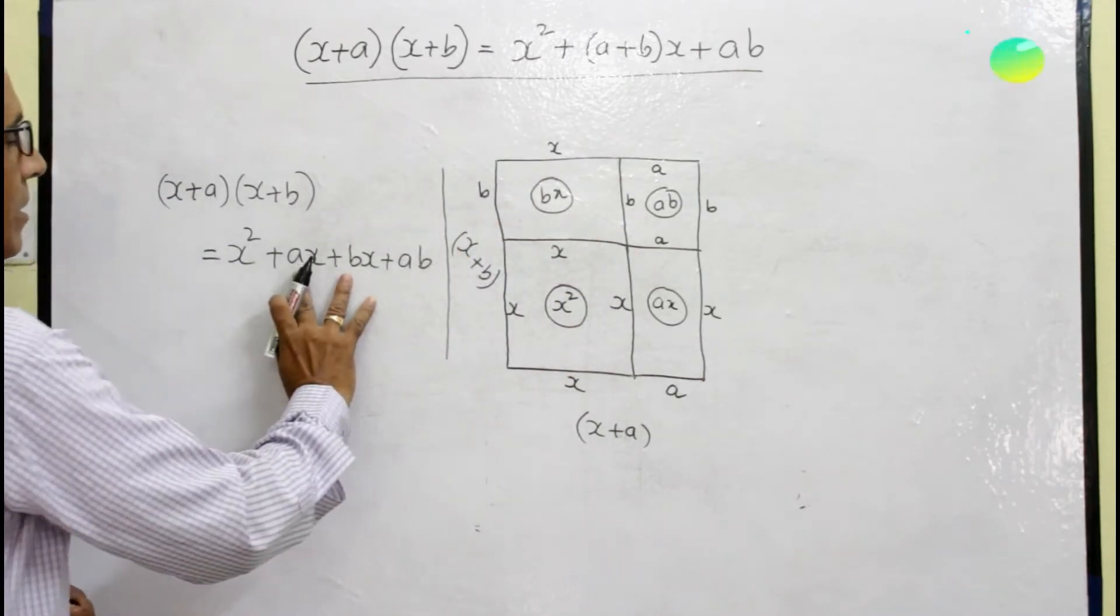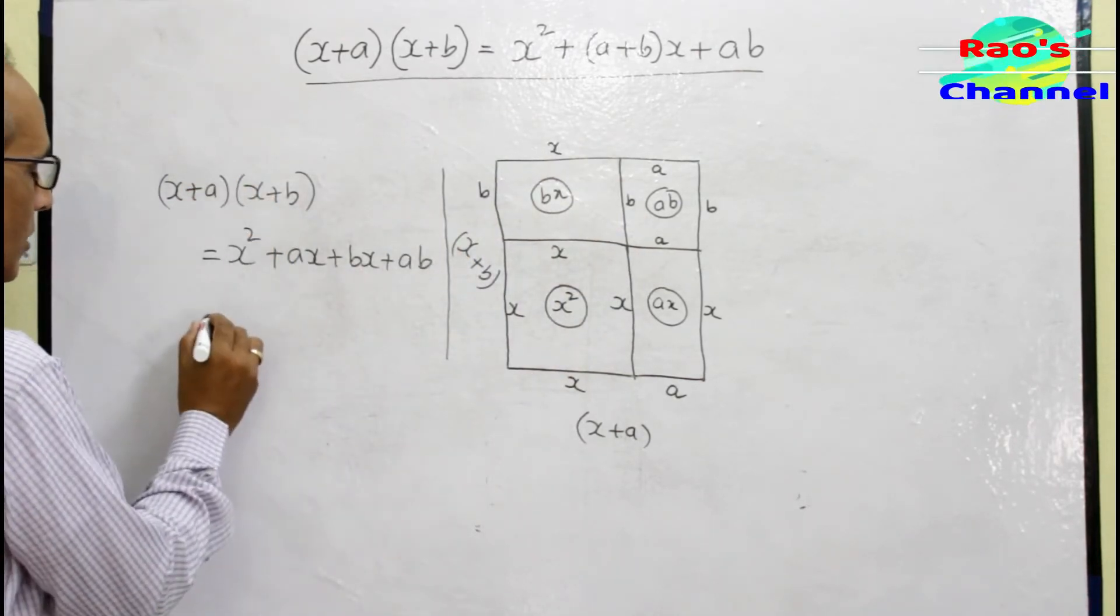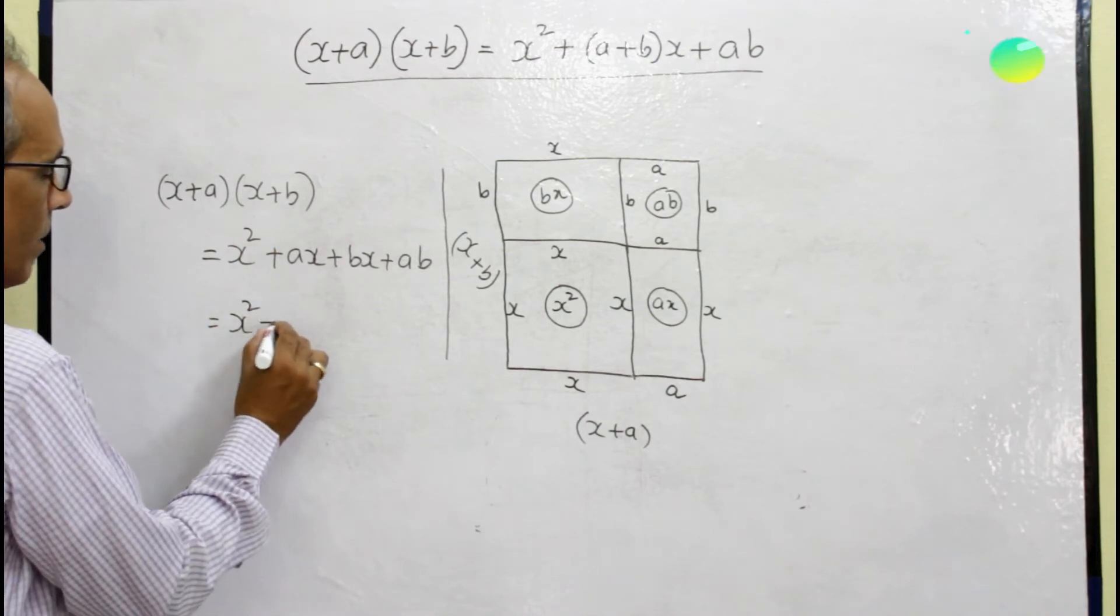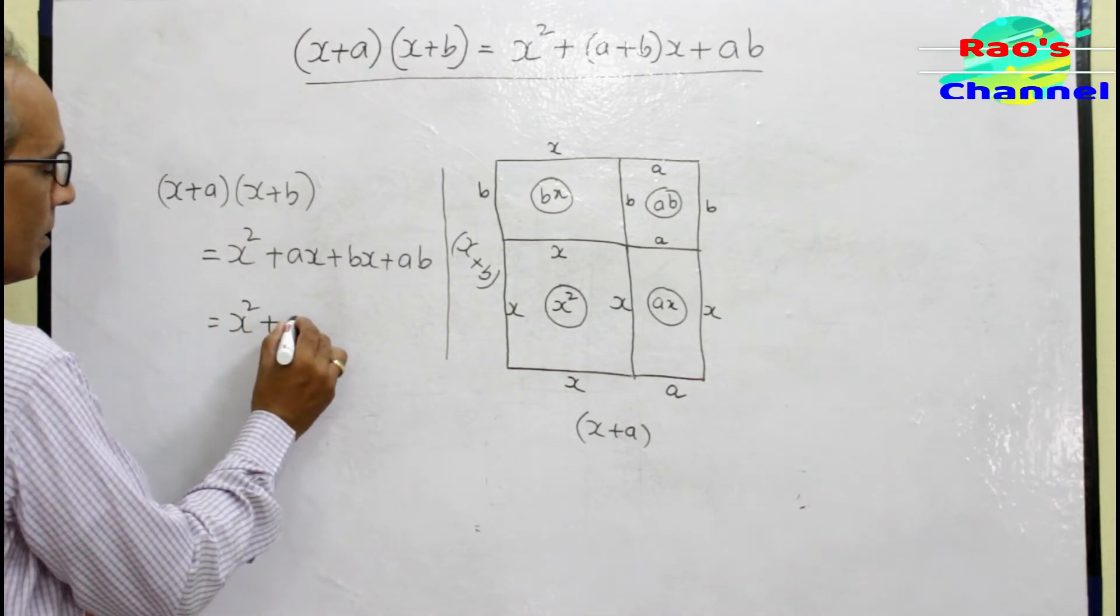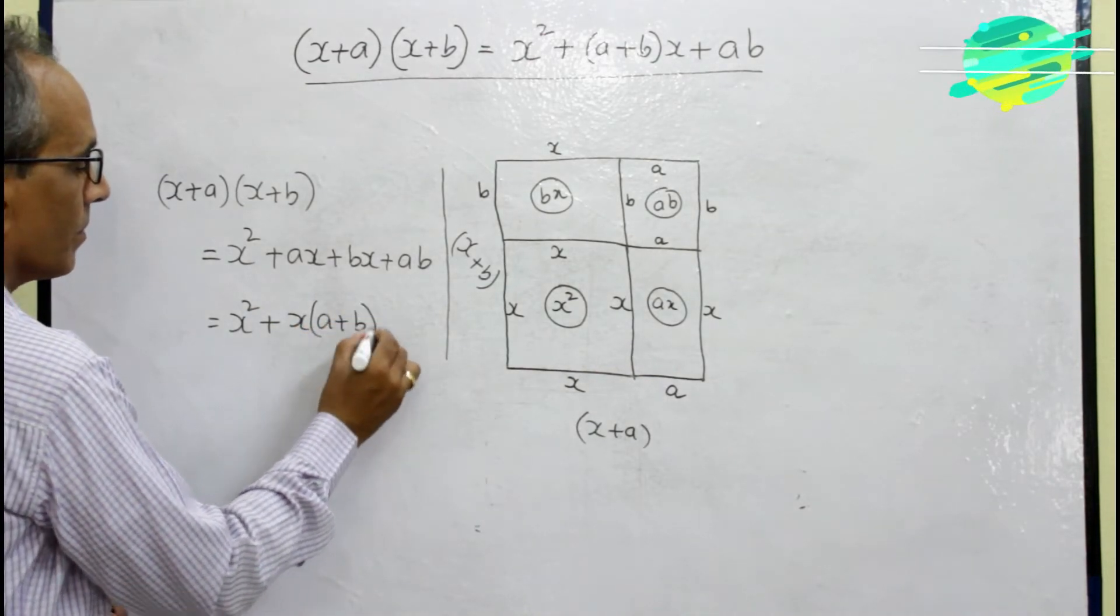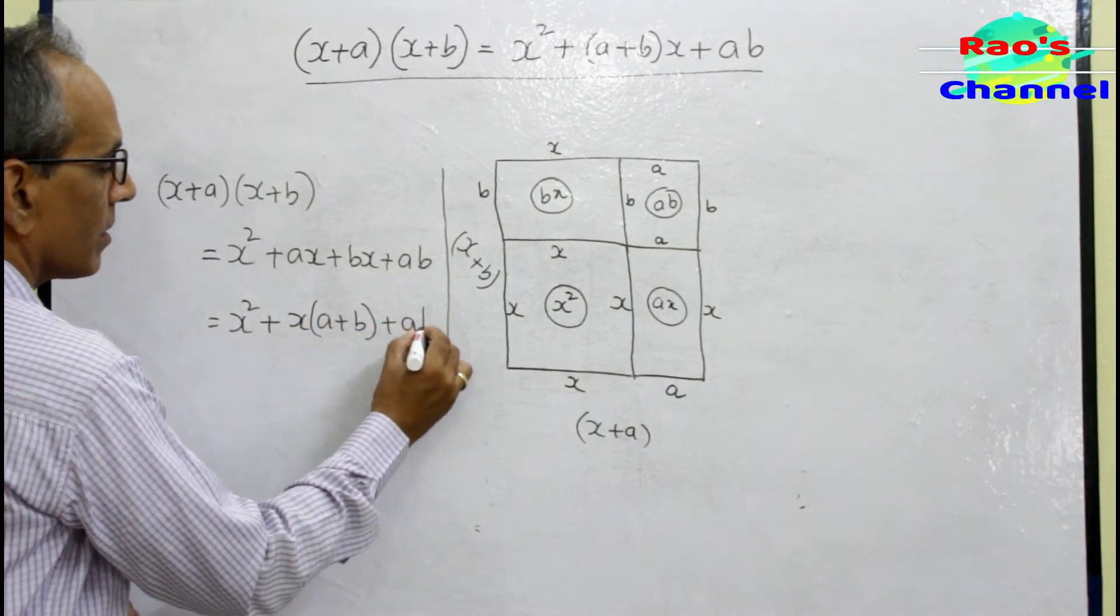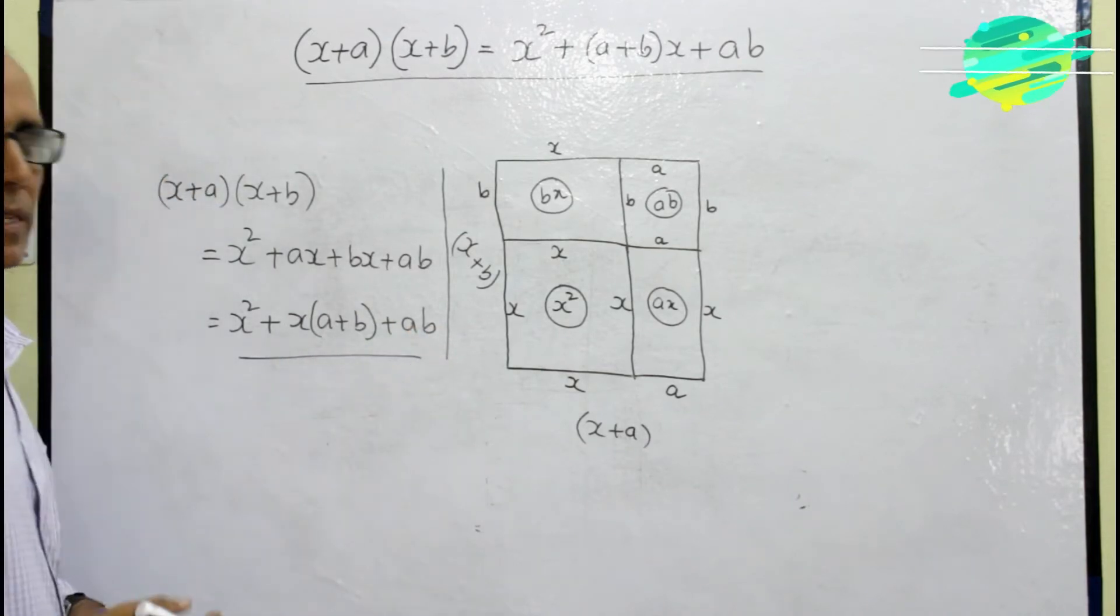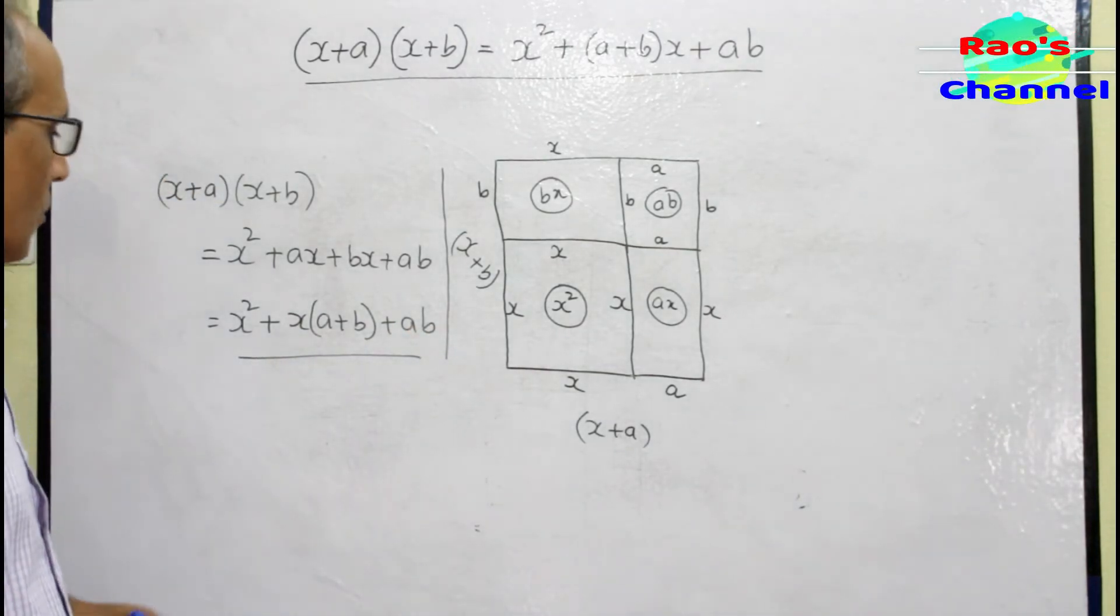Now since the middle term has the common factor x, let me take out the common factor. That is x² plus x(a+b) plus ab.